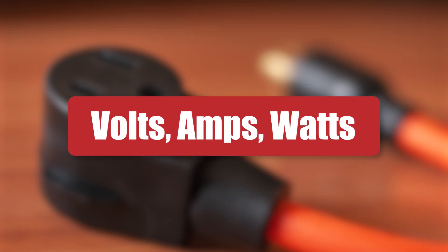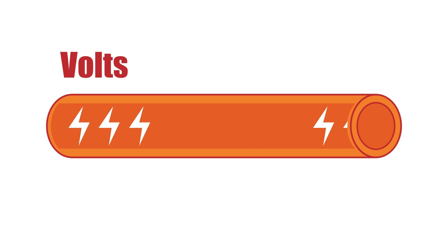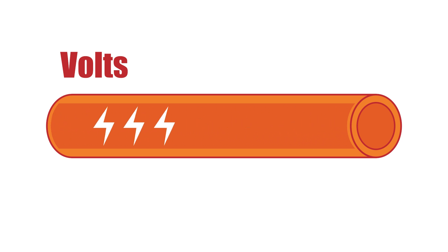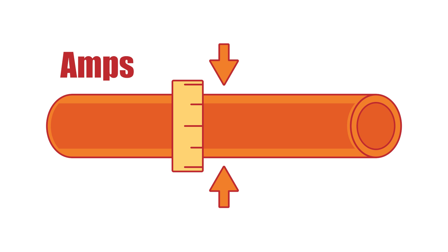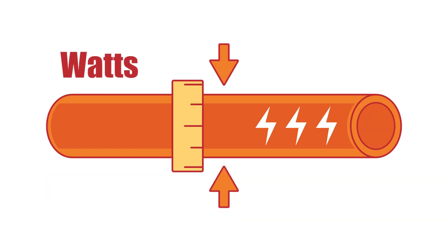Now let's talk about the power terms you hear all the time. Volts, or voltage — voltage is like electrical pressure in a circuit; it pushes the electric current through wires. For example, most household outlets provide 120 volts in the U.S., while larger appliances like dryers or oven ranges often require 240 volts. Amps, or amperage — amperage measures the flow rate of an electrical current; it's important to prevent overloading circuits and ensure proper function. Watts measure total power usage, calculated as volts multiplied by amps. For instance, a 120-volt circuit running at 10 amps provides 1,200 watts of power.